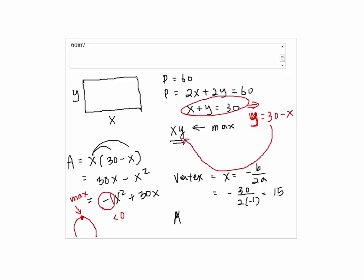And the corresponding area, which is in this case y, will be 15 times 30 minus 15, so 15 times 15. So the answer will be 225.